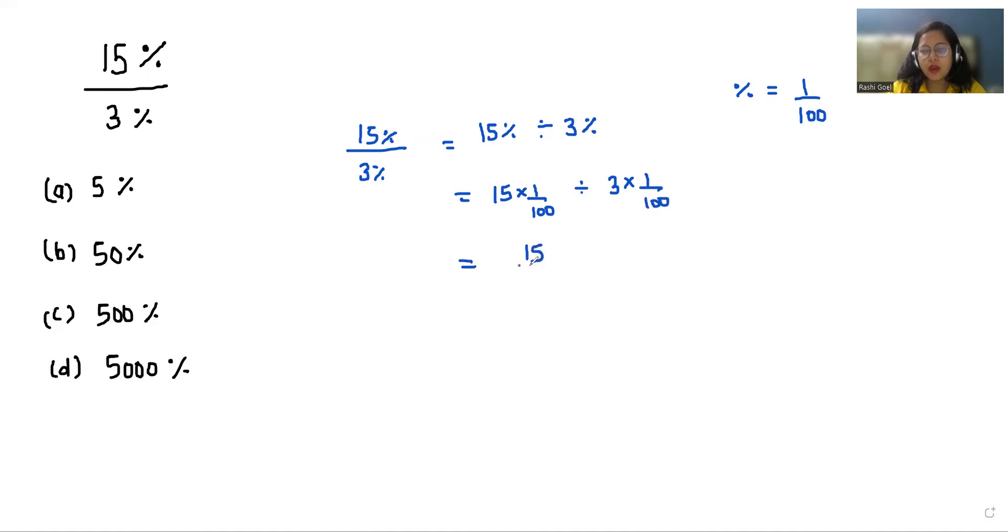So we have 15 by 100 divided by 3 by 100. We can write this as 15 by 100, remove the division sign, write a multiplication sign, and take the reciprocal. So it becomes 15 by 100 times 100 by 3.